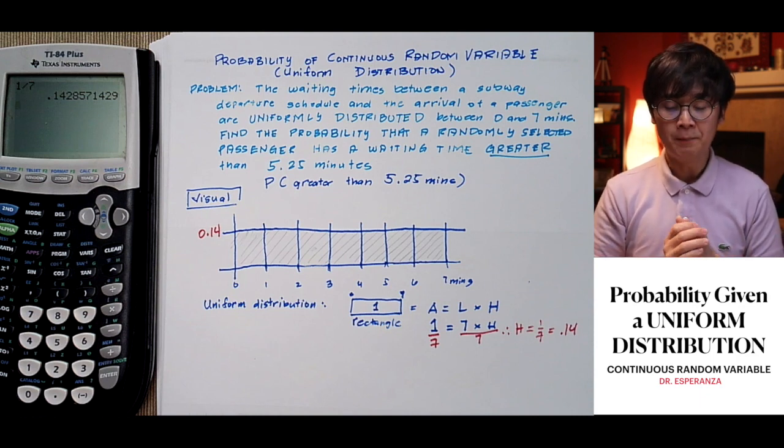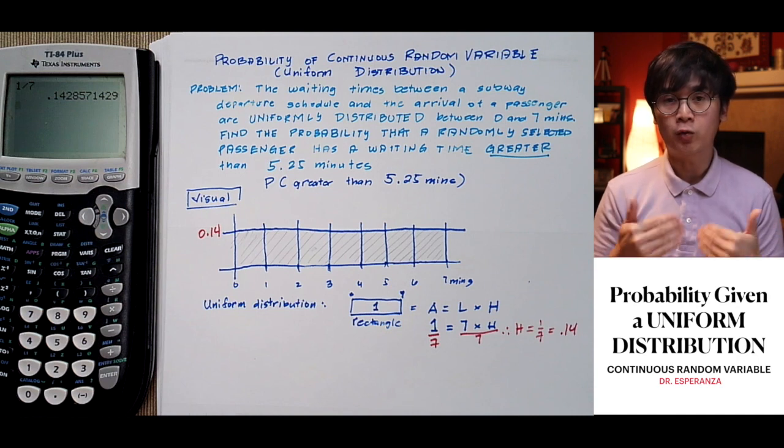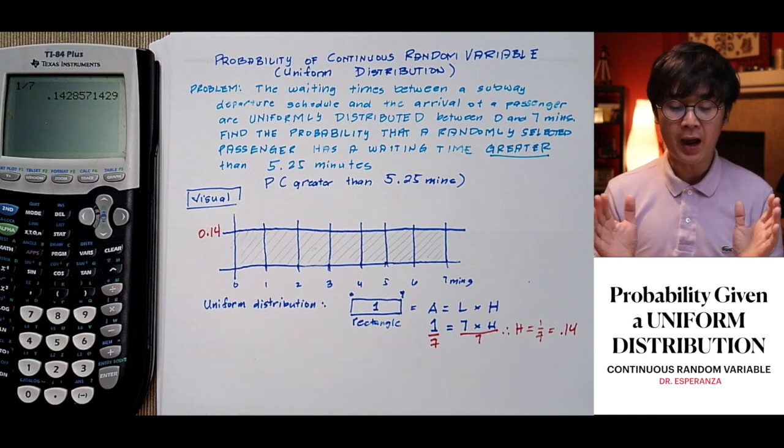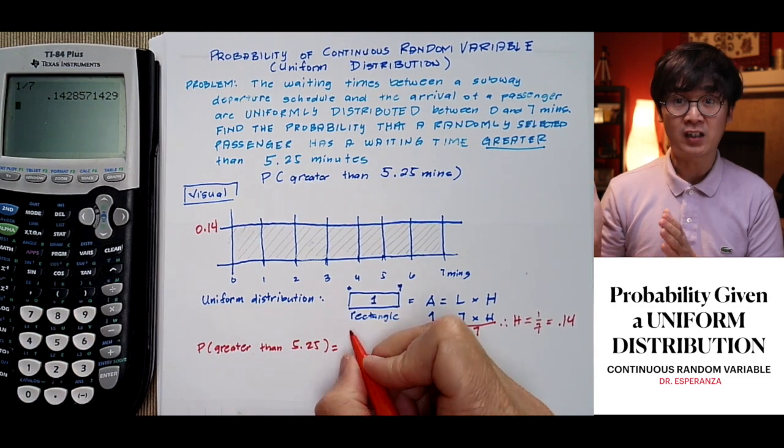So 0.14 is the height of our distribution and we have a length of 7 minutes. Now that we have our visual, we need the formula for finding the probability of greater than 5.25,